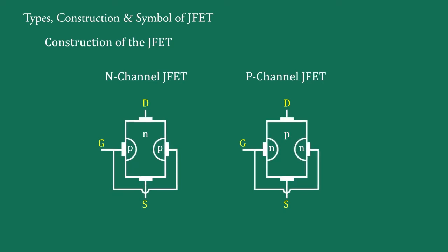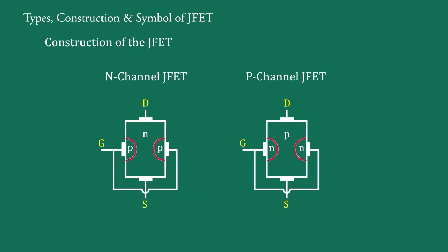In both these cases, the upper contact is known as the drain D and the lower contact as the source S. The two PN junctions are created near the center at the remaining two sides of the bar, using the opposite type of material to that of the bar. Since the bar here is N type, this region is P type. And in the P Channel JFET, since the bar is P type, these regions are of N type.